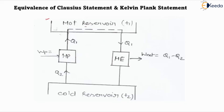In the diagram we have two reservoirs: one is a hot reservoir maintained at temperature T1 and another is a cold reservoir maintained at temperature T2, where T1 is greater than T2. In the heat engine, heat Q1 is drawn from the hot reservoir and transferred to the heat engine, which produces some net work. The net work done is Q1 minus Q2, where Q2 is the rejected heat not converted into work, which is transferred to the cold reservoir at temperature T2.